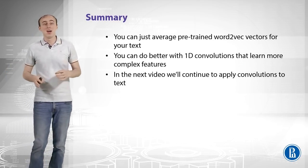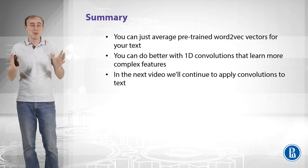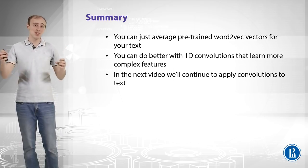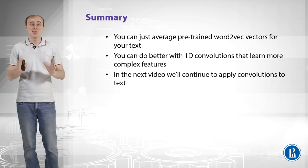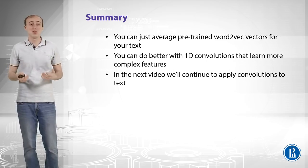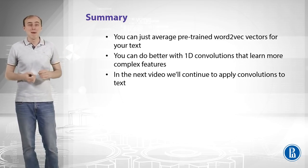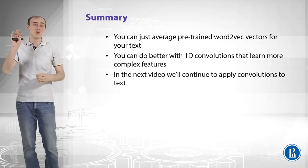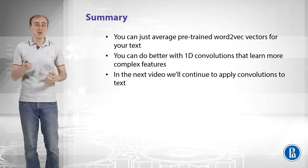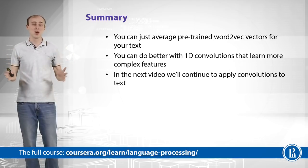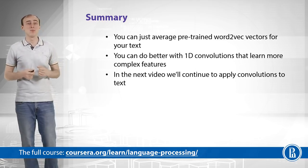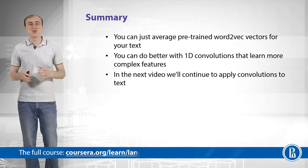To summarize: you can average pre-trained word2vec embeddings for your text — split your text into tokens, take an embedding vector for each token, and sum them up. That is a solid baseline model. A better approach is to use 1D convolutions as described, training the neural network end-to-end with backpropagation to learn the specific features needed to classify your sentences. In the next video we will continue to apply convolutions to text.